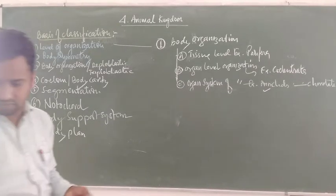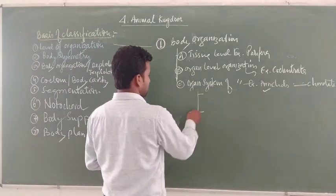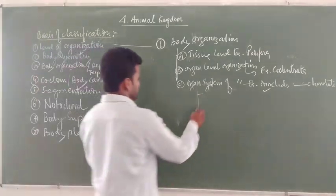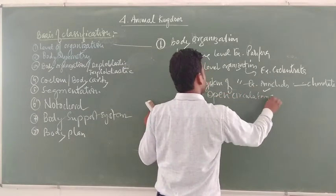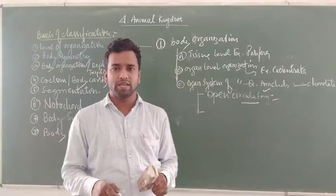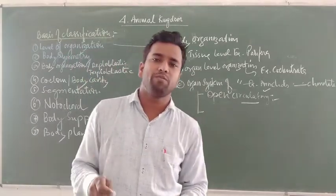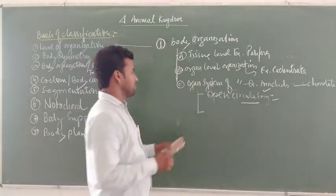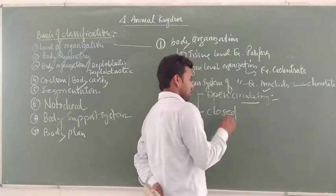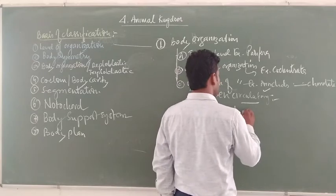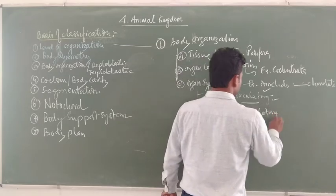If the organ system level of organization is present, another question arises: which type of circulatory system is present? In an open circulatory system, blood flows directly inside the sinuses and not inside blood vessels. Members of arthropods show an open circulatory system. Members of echinodermates, mollusks, and many chordates are considered under the closed circulatory system. These are important parameters used for classification.